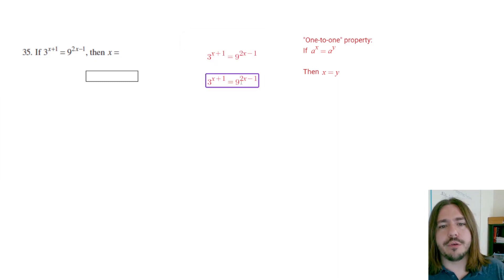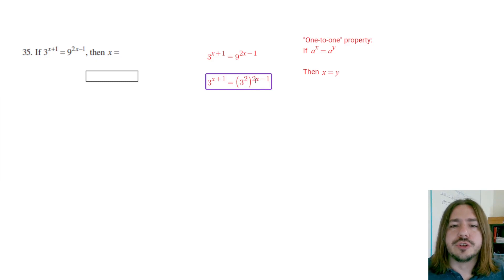So 9 is a power of 3. Specifically, it's 3 squared. So I'm going to write this as 3 squared to the power of 2x minus 1.